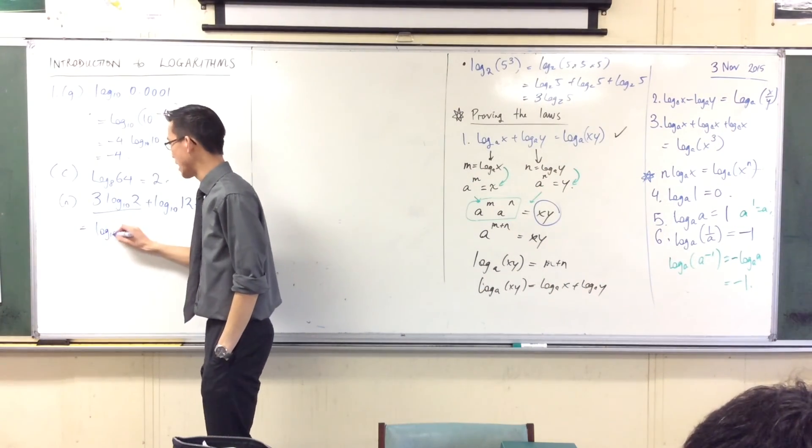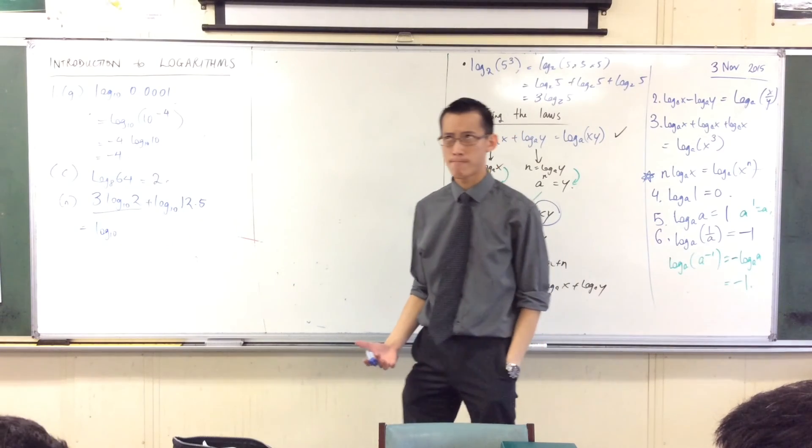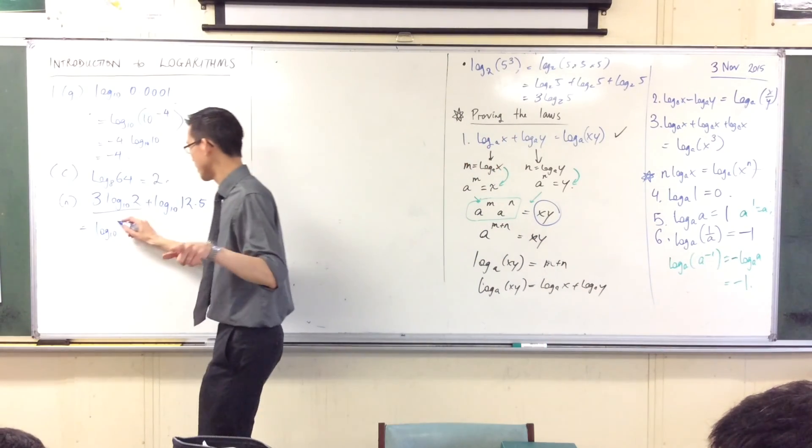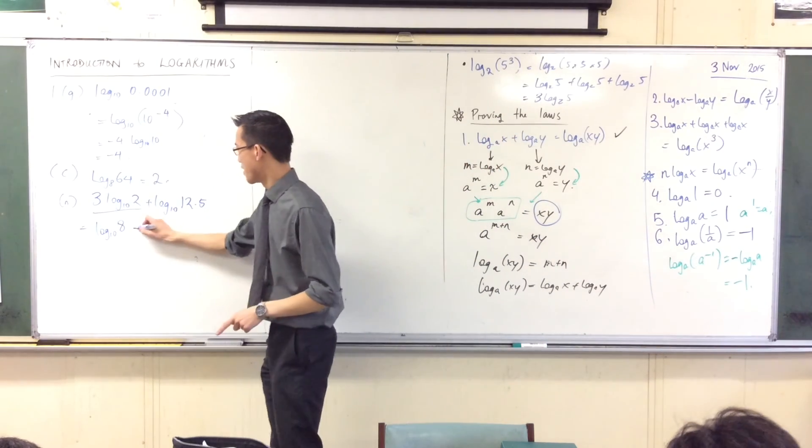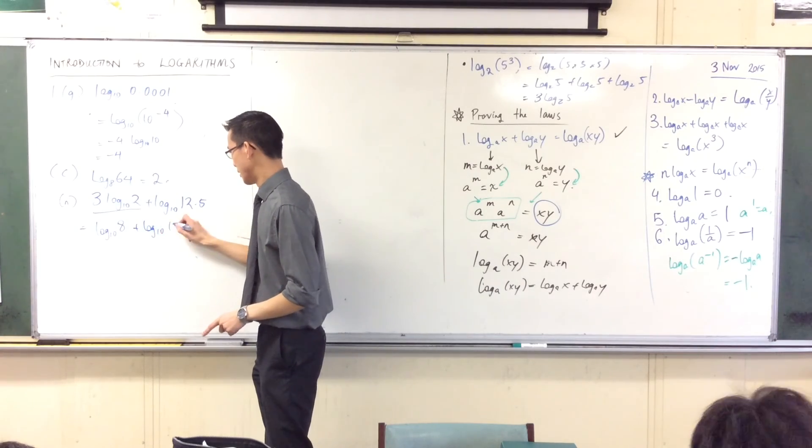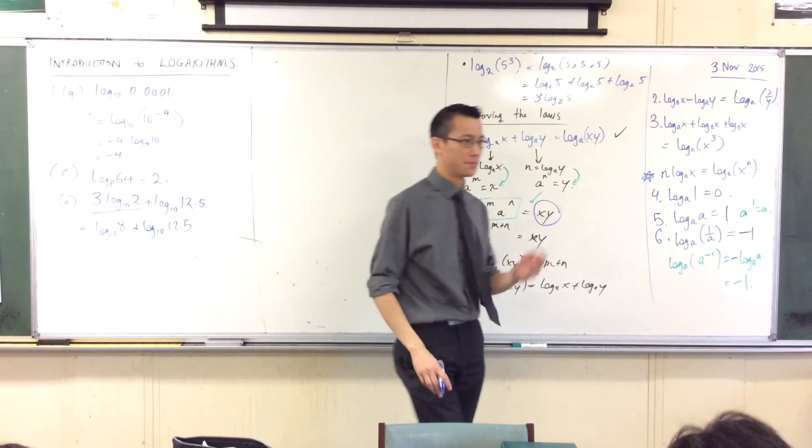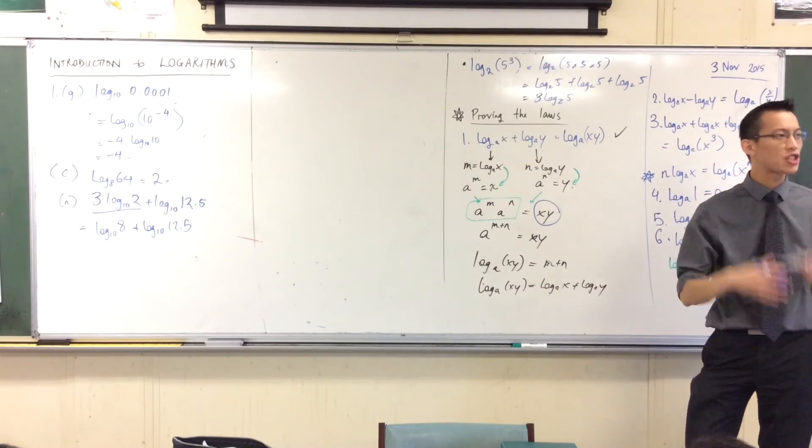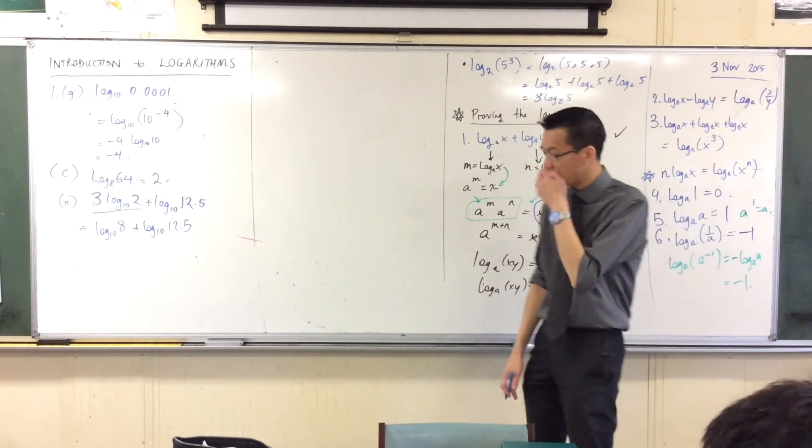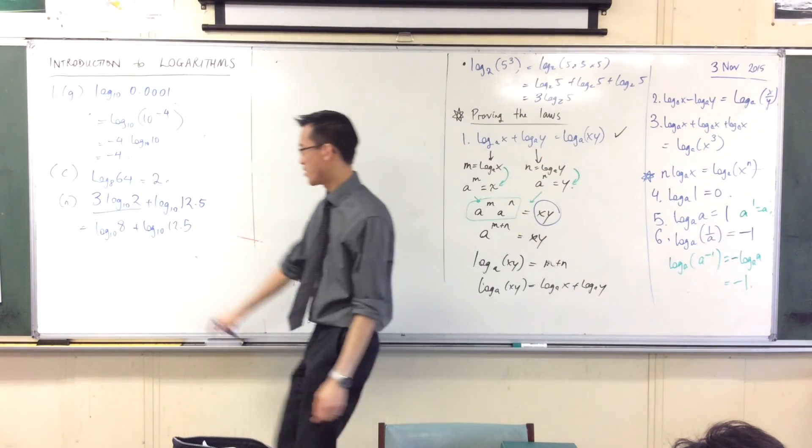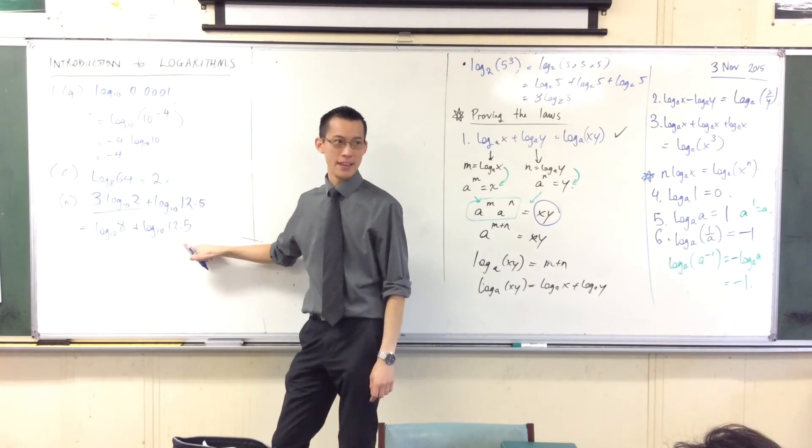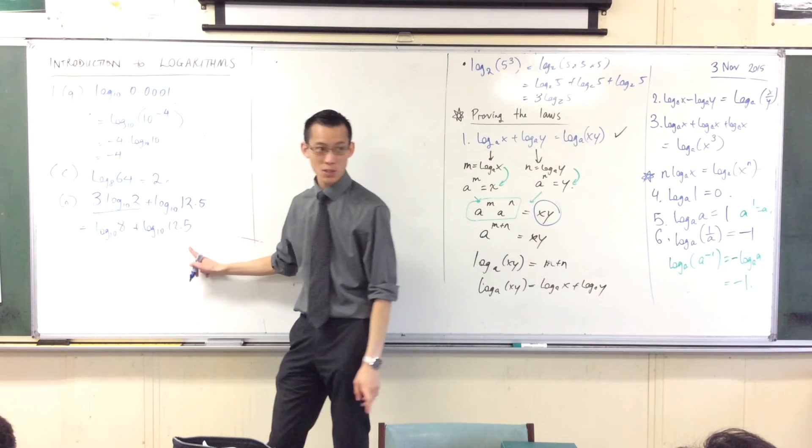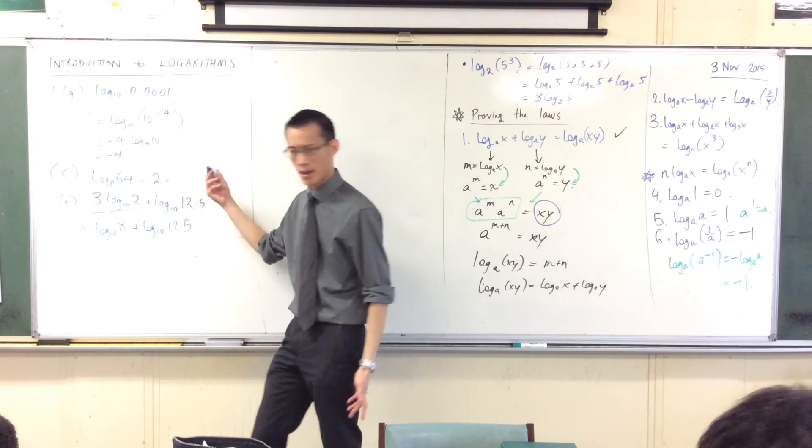Log base 10 of, what's 2 cubed? 2 times 2 times 2 is 8. Excellent. So now I've got 2 logs, and I'm adding them. First, I'm going to get 8 times bigger. Then I'm going to get 12.5 times bigger. Now, if you want, you can reach for your calculator. But I happen to know that 8 times 12.5 is the same as 4 times 25. Do you agree with that? 4, 25. That's 100.